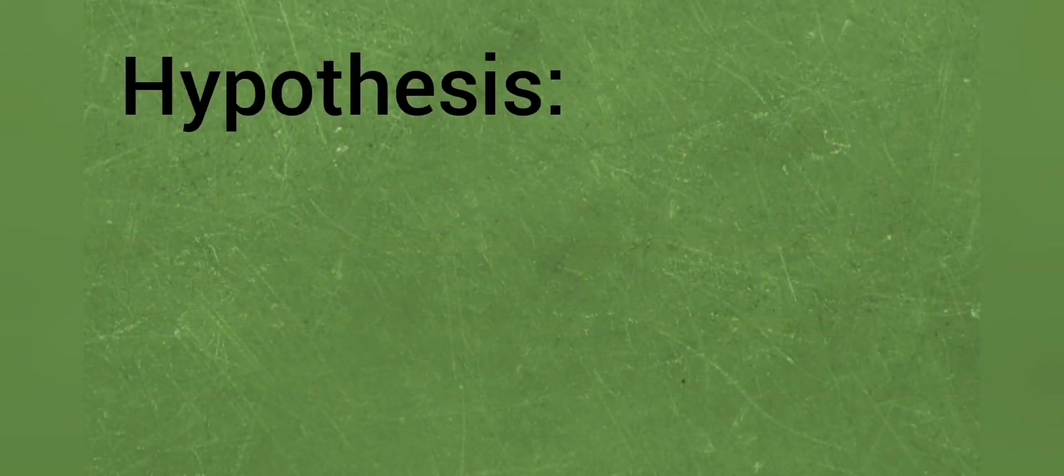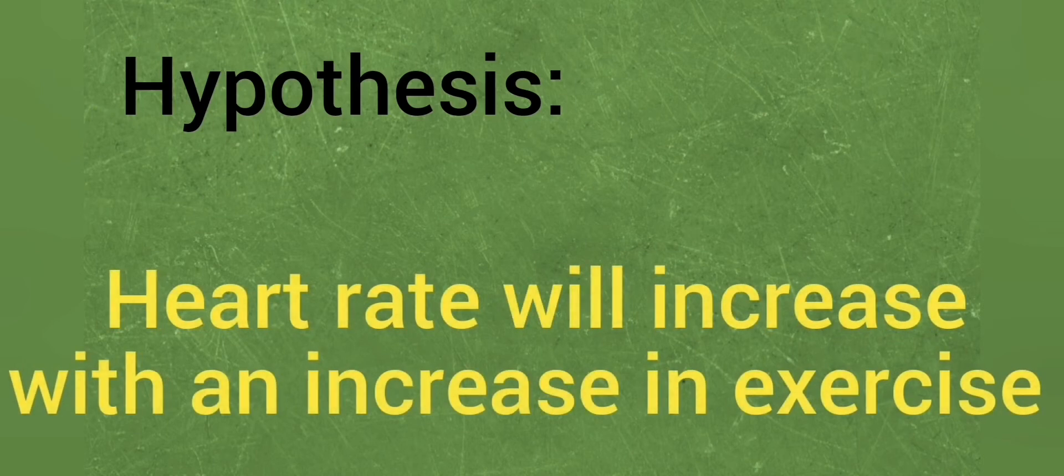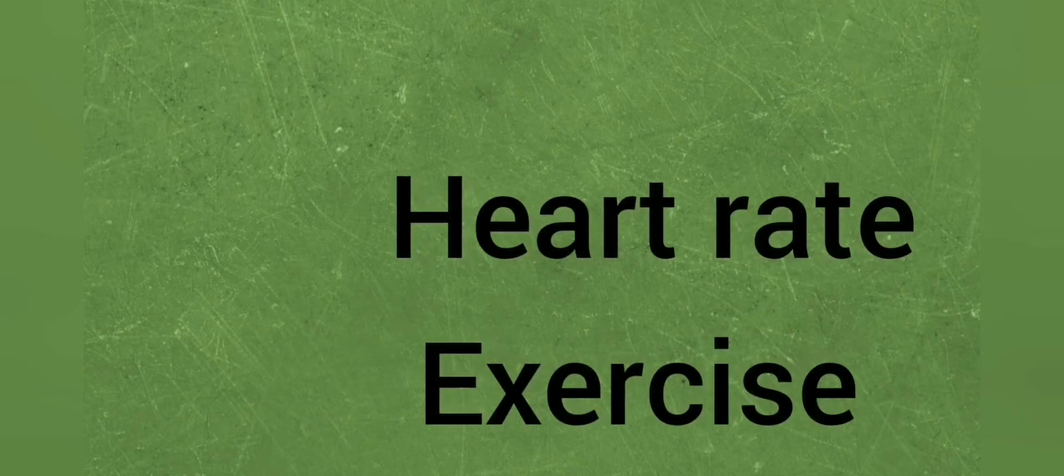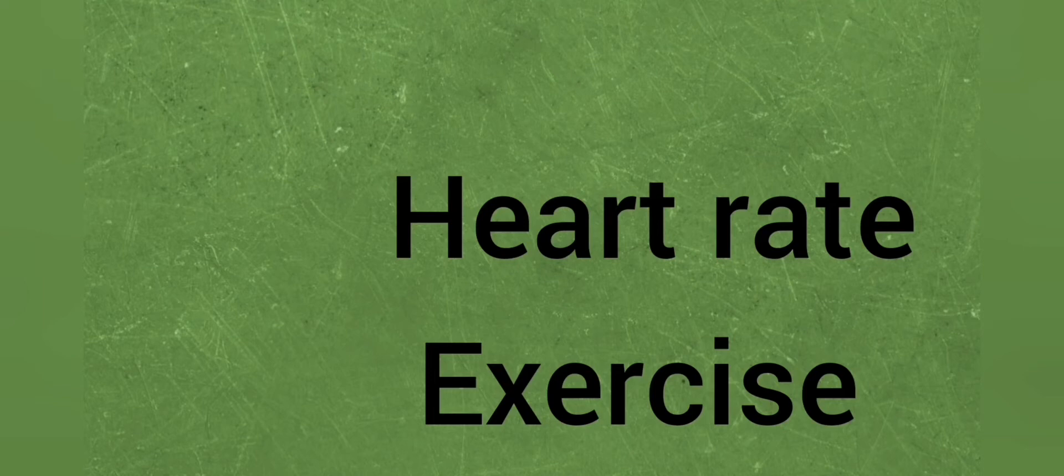Now to write a hypothesis you need to take the word exercise and heart rate and make a sentence but predict what the effect of the one on the other will be. So one possible hypothesis could be heart rate will increase with an increase in exercise. But since it's a prediction you could also say heart rate will decrease the more a person exercises, as long as you say how the exercise influences the heart rate. So how the one will change in relation to the other.